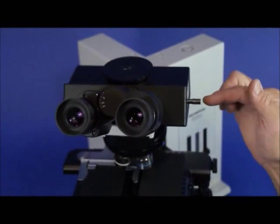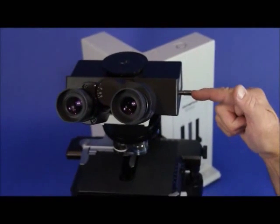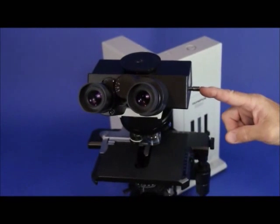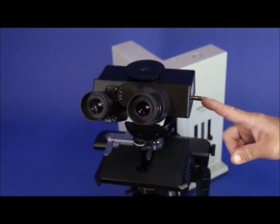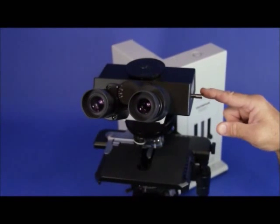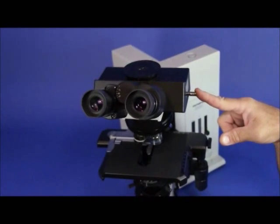And we also have a light path selector on the right-hand side, which is a three-position light path selector. Most ordinary trinoculars are either fixed with one position or two positions. This one has a three-position light path selector.